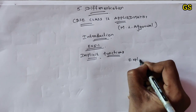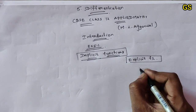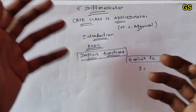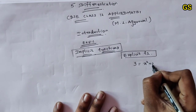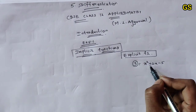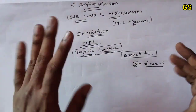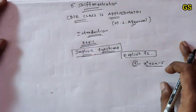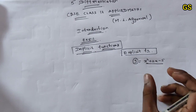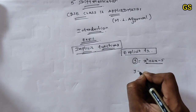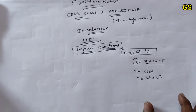One is the explicit function. Explicit function - you will know it explicitly. For example, y is equal to x squared plus 2x minus 5. Here y is given explicitly; when you ask for y's value, you know it explicitly. So y is equal to sin x, or y is equal to x squared plus e to the power x - these are explicit functions.